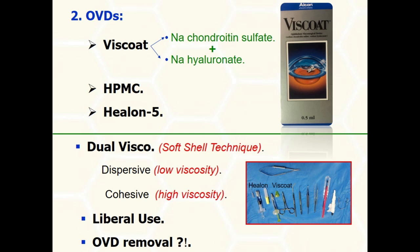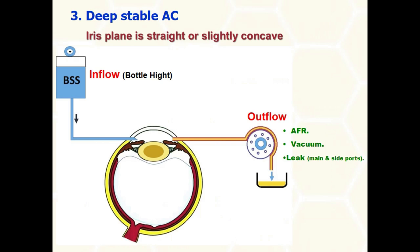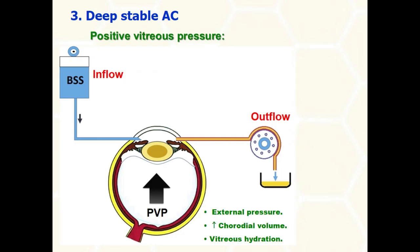Avoid excessive irrigation and give anti-glaucoma measures for a short period. Maintain the anterior chamber deep and stable at all times. This is achieved via a balance between the irrigation bottle height and the outflow through the aspiration tubing and incisional leak. If fluidic parameters are okay and the anterior chamber is shallow, think about positive vitreous pressure. Exclude tight speculum, excessive eye movements, and patient straining.